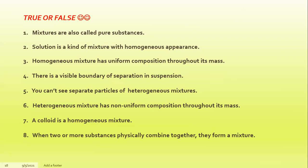Number five: you can't see separate particles of heterogeneous mixtures. Number six: heterogeneous mixture has non-uniform composition throughout its mass. Number seven: a colloid is a homogeneous mixture. Number eight: when two or more substances are physically combined together, they form a mixture.